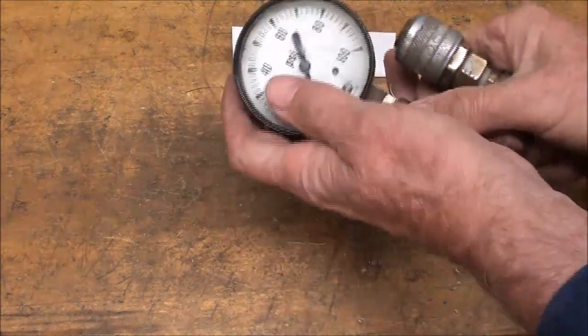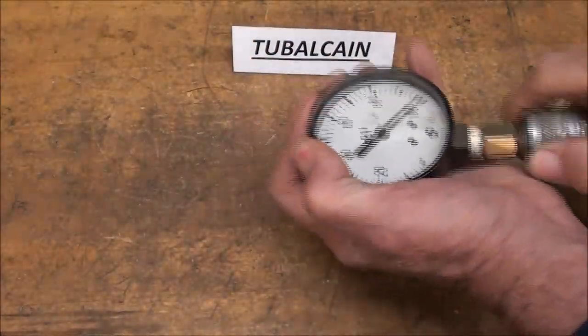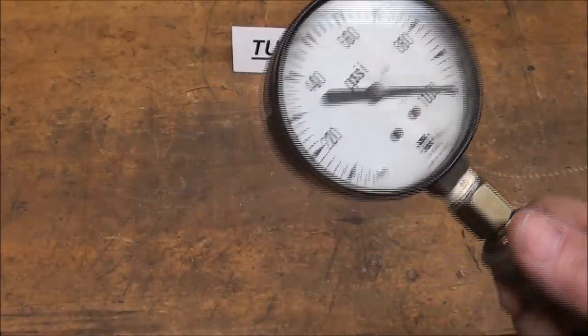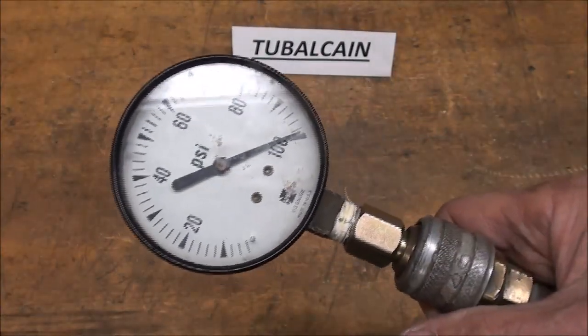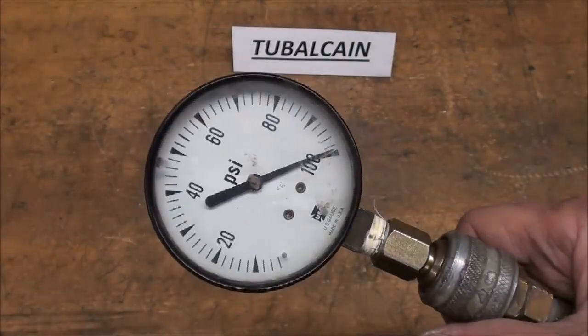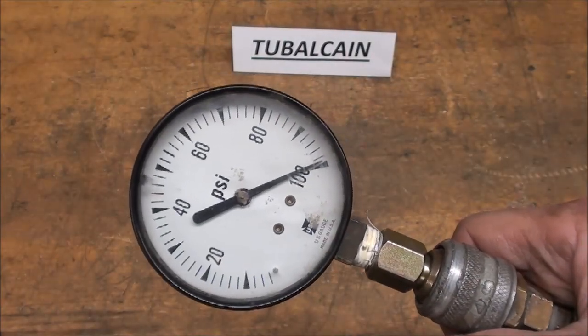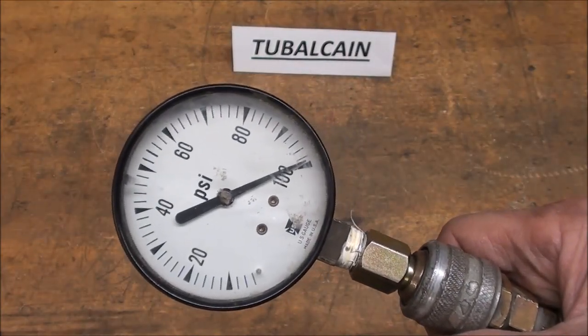So let's take a look at what makes a pressure gauge work, and most gauges of this type, which we call a Bourdon tube, are very similar in construction. So let me take this one apart and talk about how it's constructed.